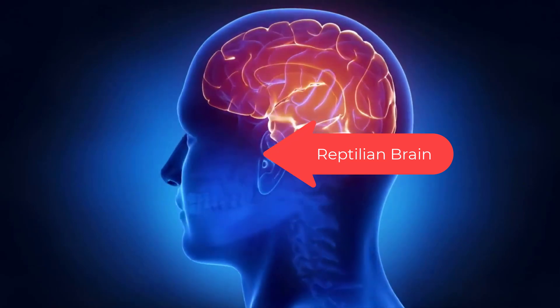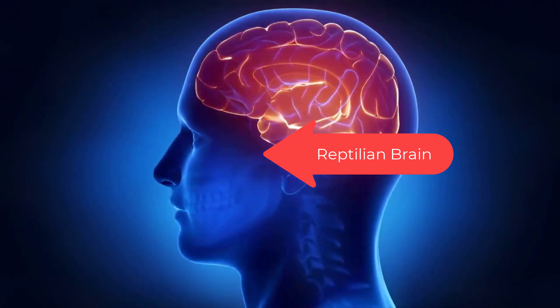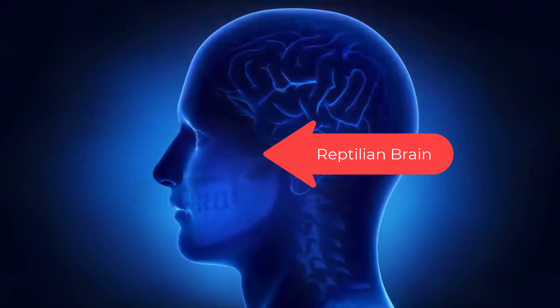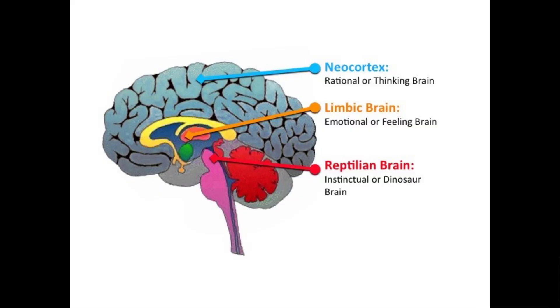The reptilian brain can take into account input from the other brains, but it can also decide faster than the blink of an eye, then use the other brains to justify the decision. The reptilian is visual and hardwired into the brain stem.